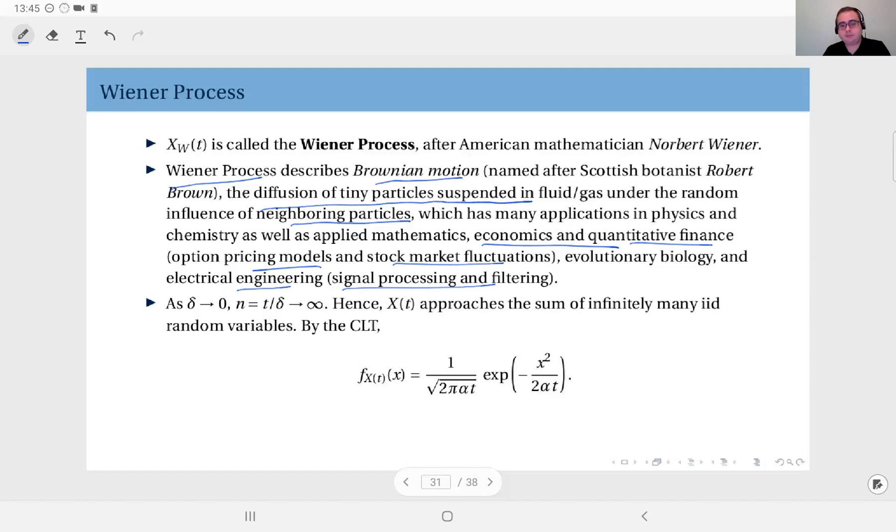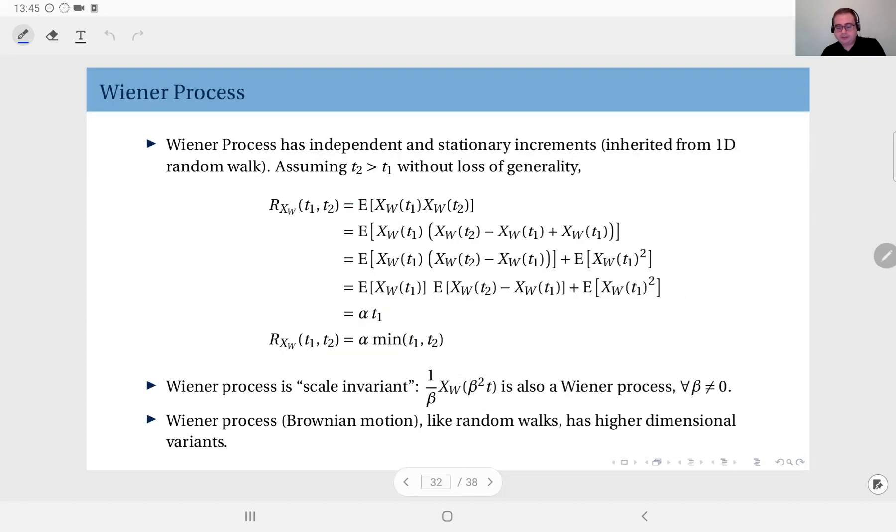How do we mathematically describe the Wiener process? When delta tends to zero, n equals t divided by delta. Therefore, in time t, you observe an infinite sum of infinitesimally small steps. X(t) approaches the sum of infinitely many IID random variables. Therefore, by the Central Limit Theorem, it has a Gaussian distribution. Its mean is zero and its variance is alpha times t. This is the distribution it has.